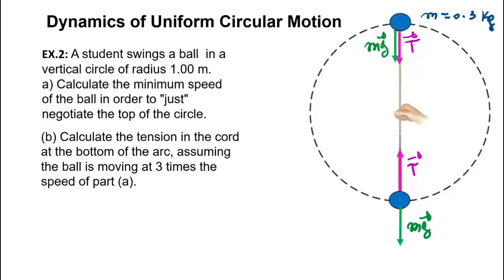We are going to solve this problem using dynamics of uniform circular motion. A student swings a ball with a mass of 300 grams or 0.3 kilograms, tied to a rope, in a vertical circle. The radius of the circle is 1 meter. The question is to calculate the speed of the ball in order to just negotiate the top of the circle.